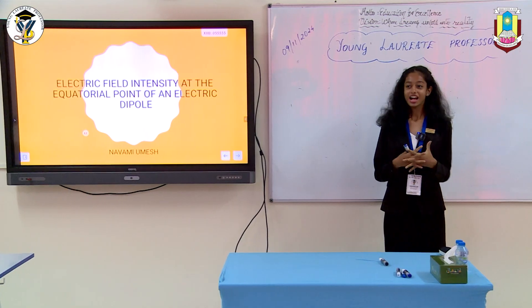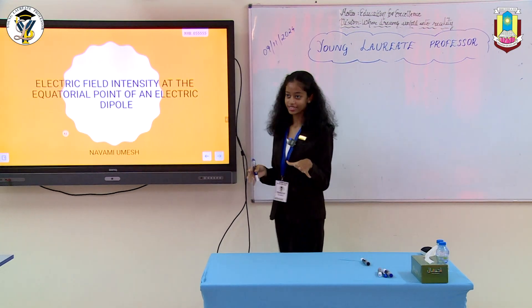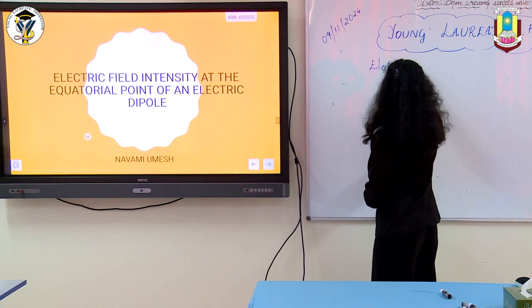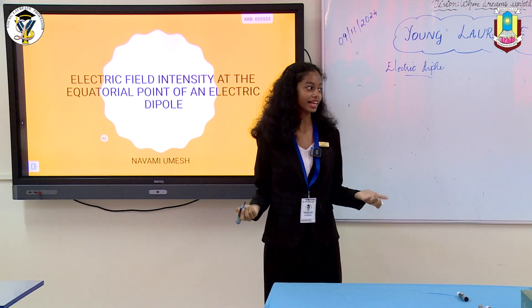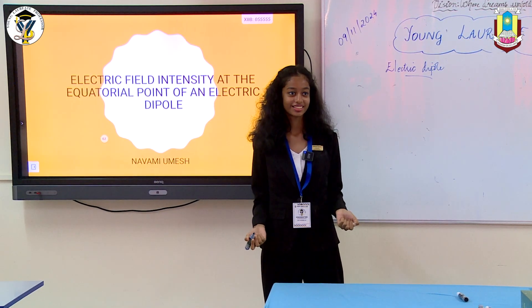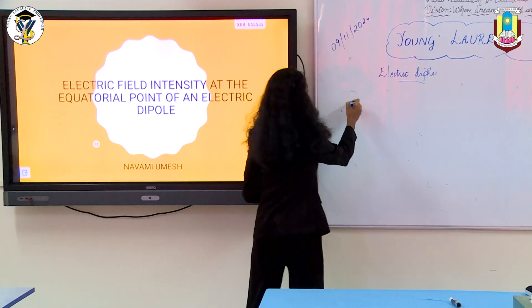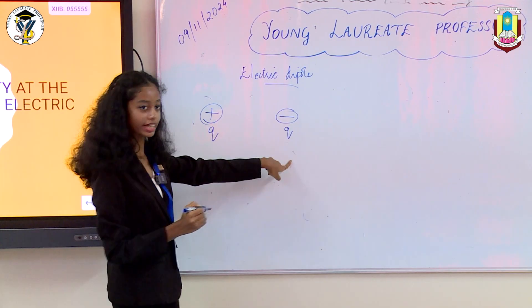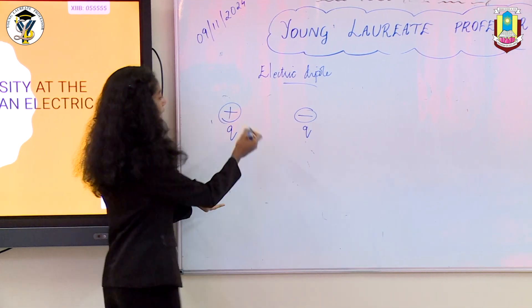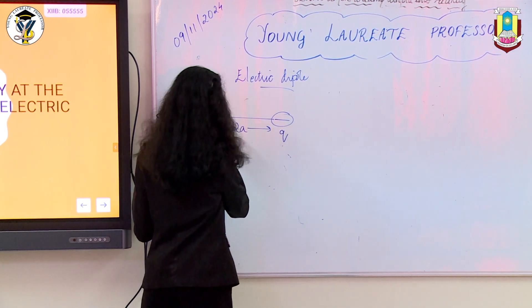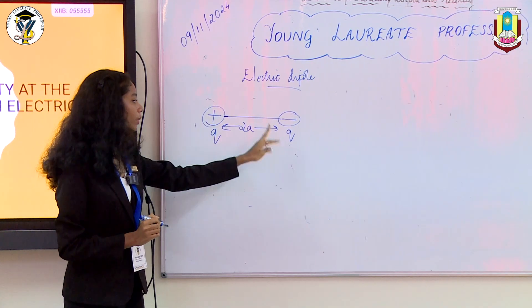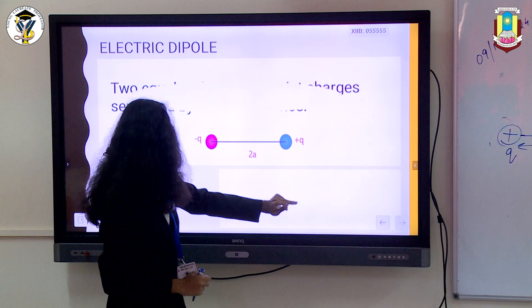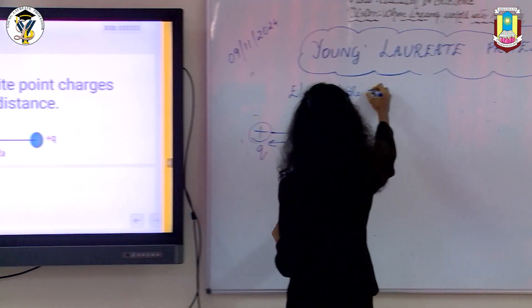Good morning everyone. Let's make physics less complicated. Let's start with the electric dipole. What is an electric dipole? We have a positive charge q and another charge, negative q. These two charges are equal and opposite, separated by a very short distance 2a, and this is called an electric dipole.